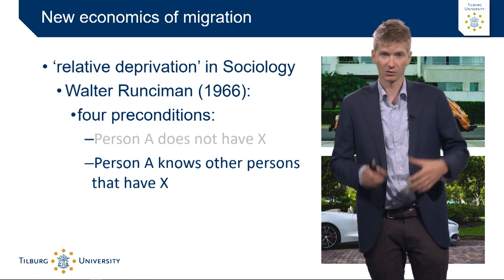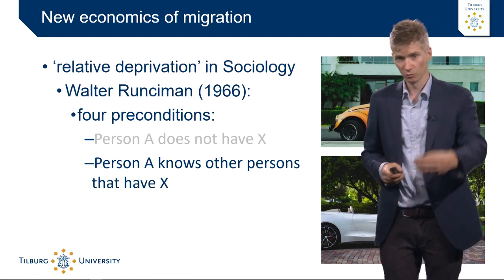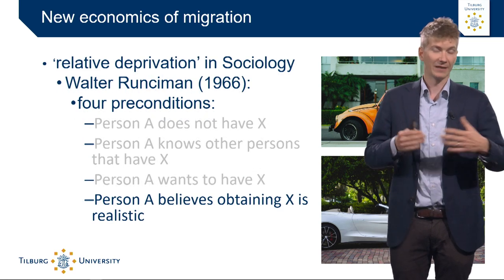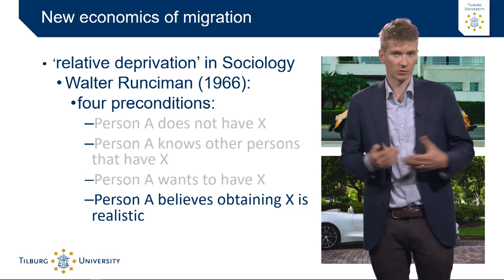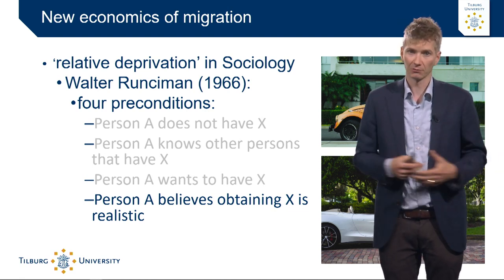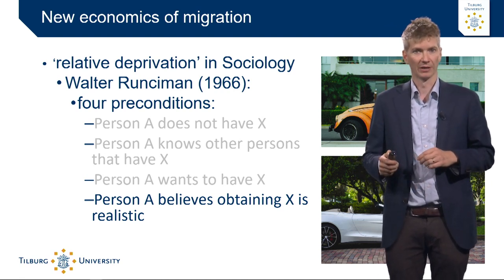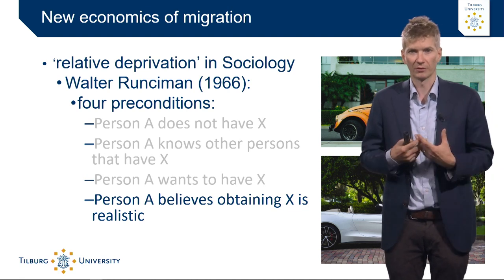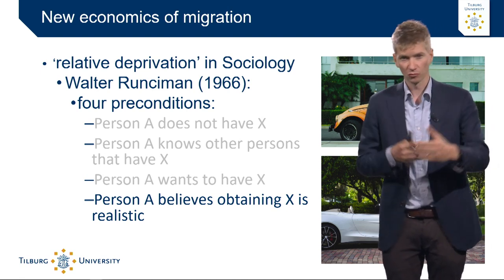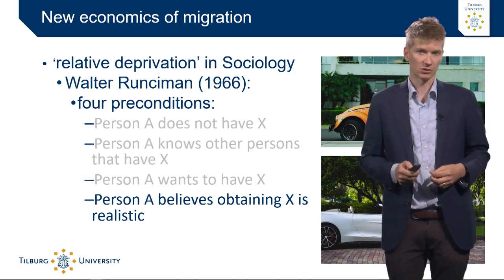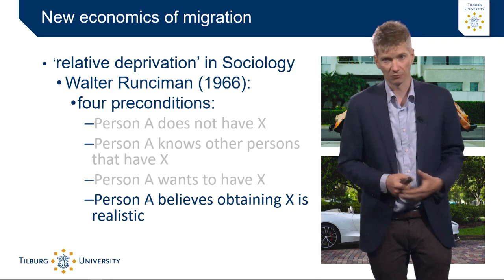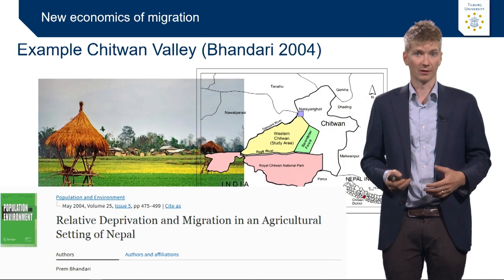That is the second precondition: you know that I have a car, you want that car as well, so you feel relatively deprived because you also want an Aston Martin. And of course you also know that obtaining this is realistic, because you know that I sent some family members abroad who sent me remittances, which allowed me to buy that car. So you think, okay, we will do the same — we will also send a family member abroad. That is how relative deprivation works: it is not about comparing yourself to the whole of society, but comparing yourself to people next to you who you know, and seeing that through migration their status changes. That is what leads a family to think about migration as an option to diversify income, increase income, and maybe improve status in the region.